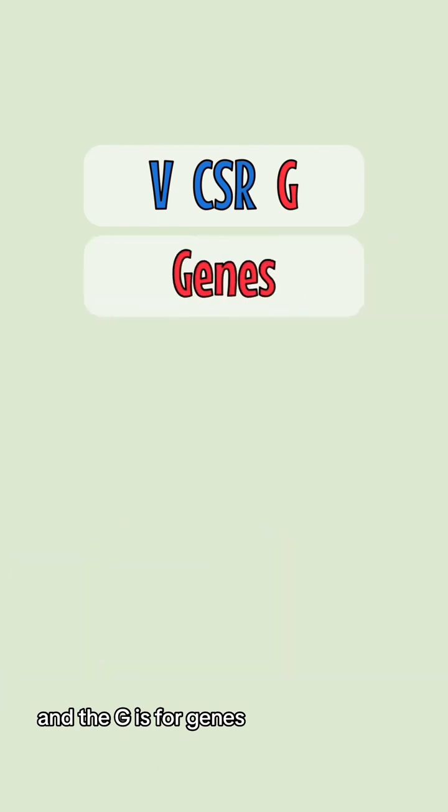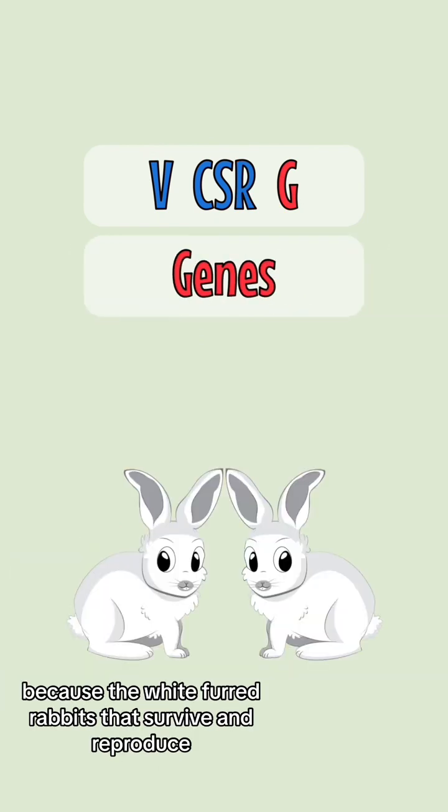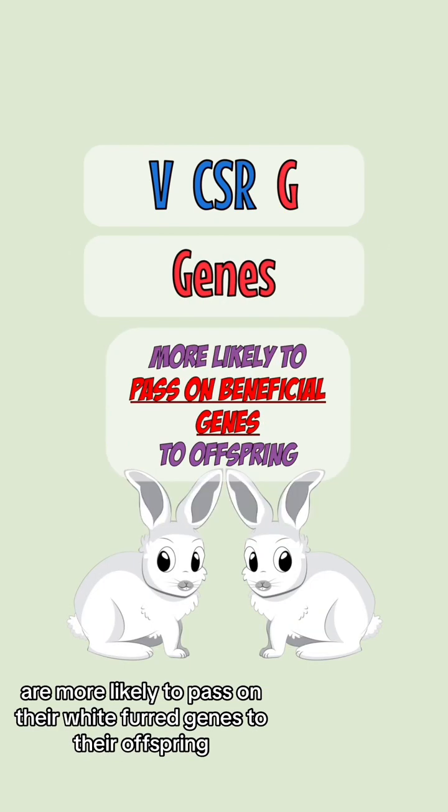And the G is for genes, because the white-furred rabbits that survive and reproduce are more likely to pass on their white-furred genes.